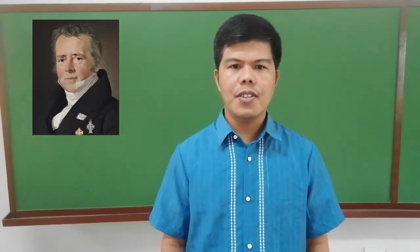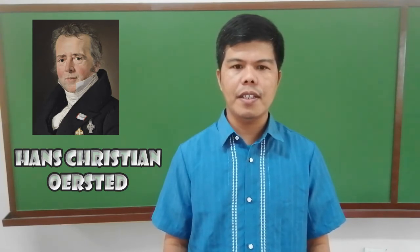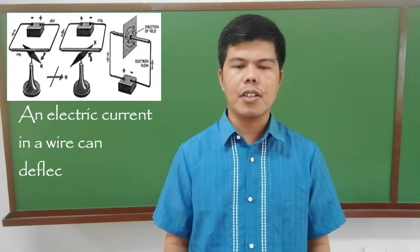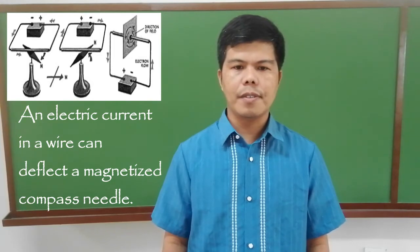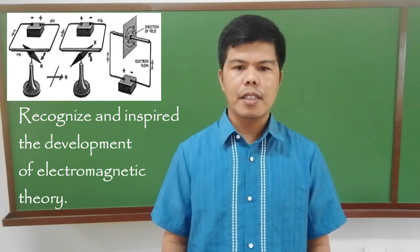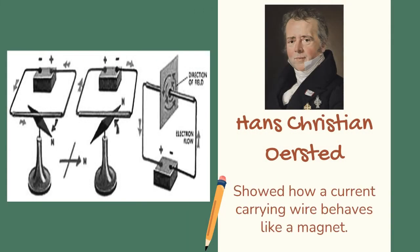Here are some scientists that contributed in the formulation of electromagnetic theory. Hans Christian Ørsted, born August 14, 1777, died March 9, 1851 — a Danish physicist and chemist who discovered that electric current in a wire can deflect a magnetized compass needle, a phenomenon which inspired the development of electromagnetic theory and showed how a current-carrying wire behaves like a magnet.